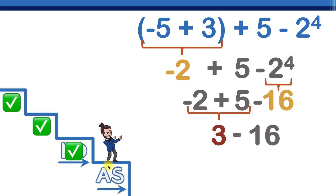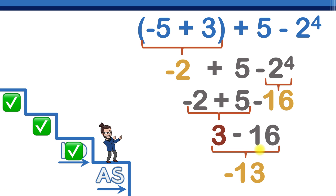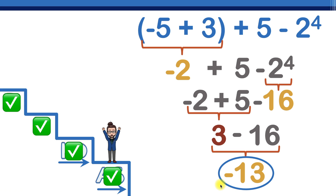Now we've got three minus sixteen, still at step four. That's like saying you have three dollars but you're losing sixteen — you're definitely losing more than you have so the answer is negative. You can pay with the three but you'll still owe thirteen, which means our final answer is negative thirteen.